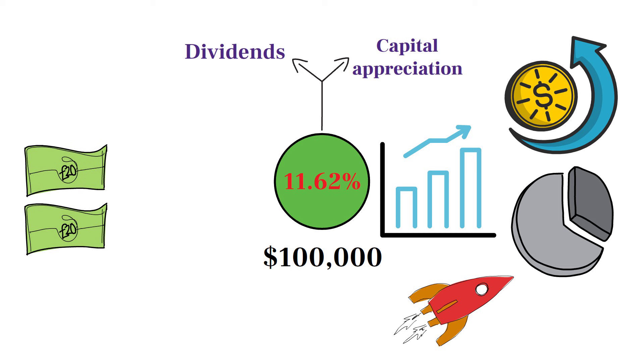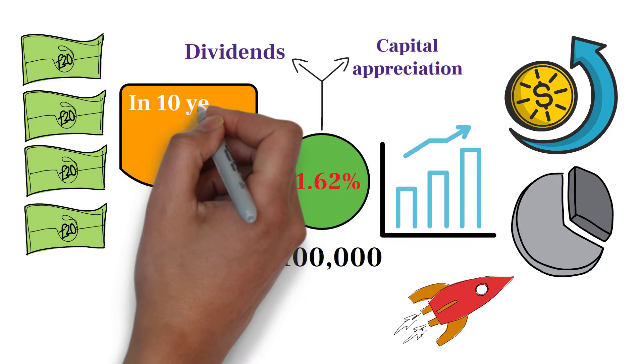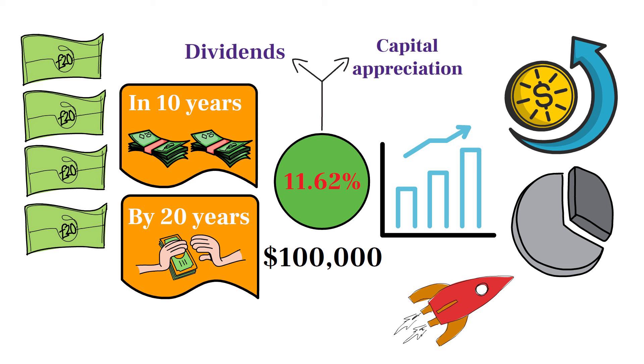Over time, this compounding effect accelerates. In 10 years, the dividends reinvested could help double your annual dividend income, and by 20 years, your initial investment could potentially generate enough income to cover a substantial portion of your living expenses.